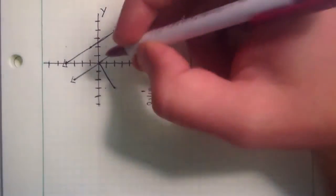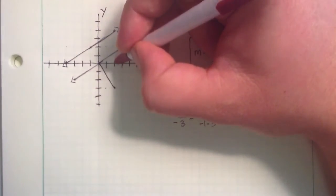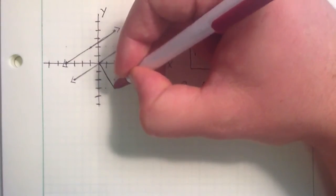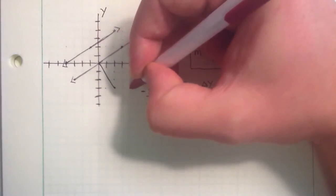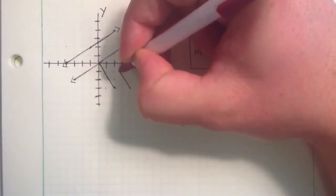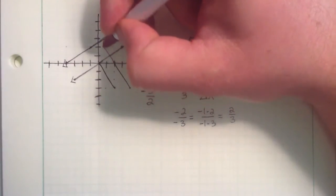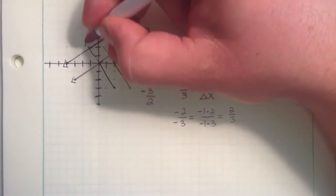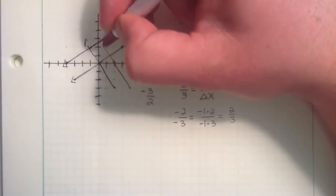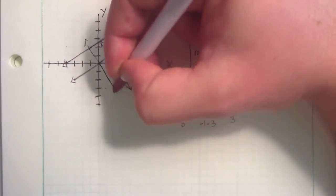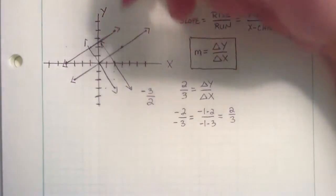Now we could do another line with a slope of negative 3 over 2 over here. We could go down 3 and then over 2. And as you can see, if we were to extend these lines, once again lines with the same slope are parallel to one another.